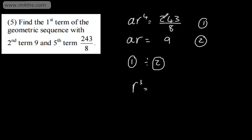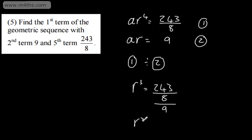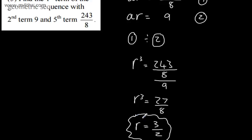If I do equation 1 divided by equation 2, that's going to give me A over A is 1, and r to the fourth over r gives me r cubed — we subtract the powers. That is going to give me 243 over 8 divided by 9, which is the same as dividing by 72, and that gives me 27 over 8. So r cubed is equal to 27 over 8, and if I take the cube root, r is going to be equal to 3 over 2.